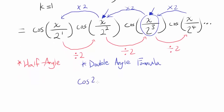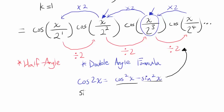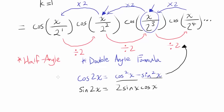The double-angle formula cosine of 2x equals cosine squared x minus sine squared x doesn't seem to fit, because we don't have cosine squared or sine squared. But sine of 2x equals 2 times sine x times cosine x — maybe we can do something with this, since we have a bunch of cosines multiplied together. We don't have sine of 2x, only cosines.